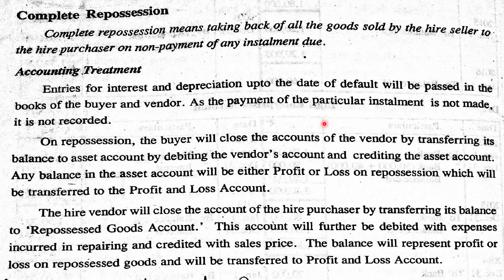When a particular installment is not paid, it will not be recorded — default is not paid. On repossession, the buyer will close the accounts of the vendor by transferring the balance to the asset account, by debiting the vendor's account and crediting the asset account. The journal entry is: Hire Vendor's Account Dr. to Asset Account.